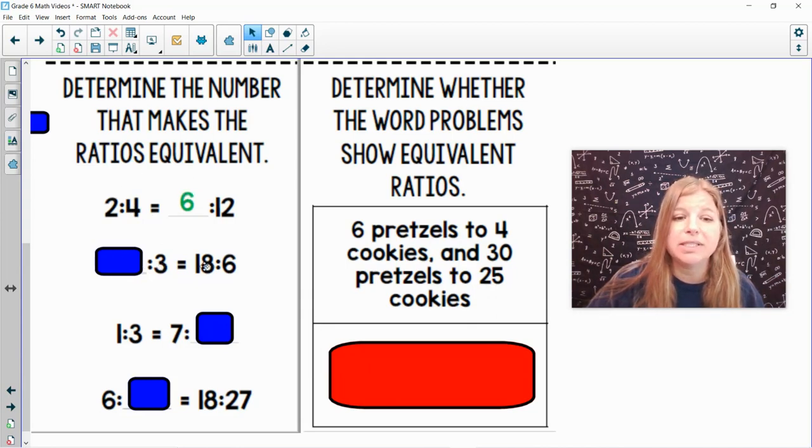Here, blank to 3 is equal to 18 to 6. Think about it. 3 times what is 6? 2. So then I have to think, what number times 2 would get me 18? If you said 9, you're correct. Now look at this. 9 times 2 is 18. 3 times 2 is 6.